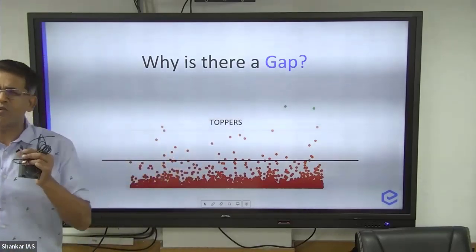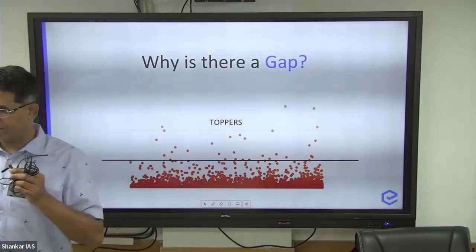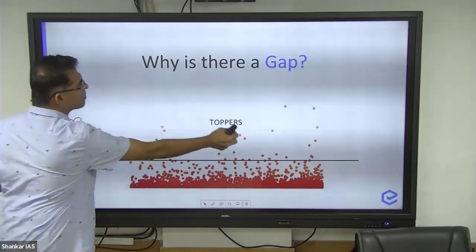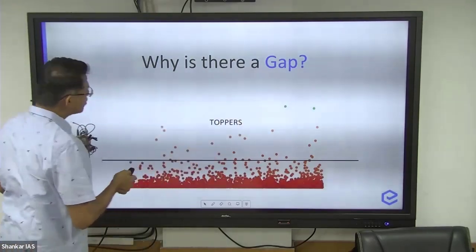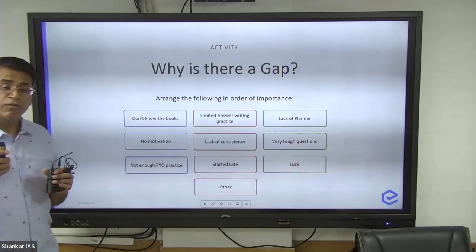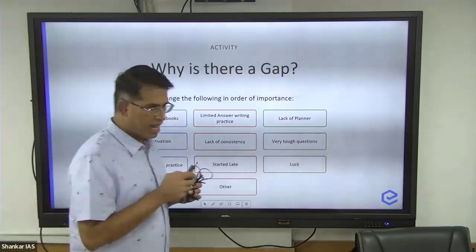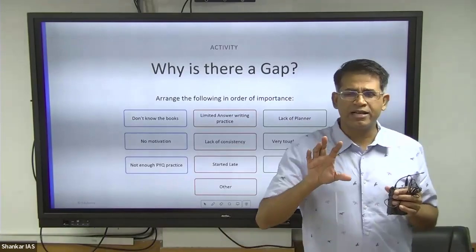There's a typical gap we have. There's a huge crowd at the bottom, and some of them escape and become toppers. So I'm discussing now why this gap, and I'm talking from the perspective of geography, plus see if you can appreciate this in terms of GS also in some ways.